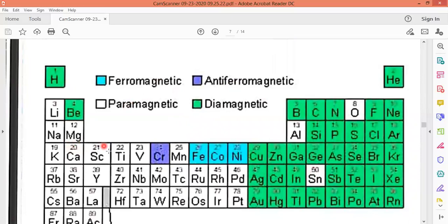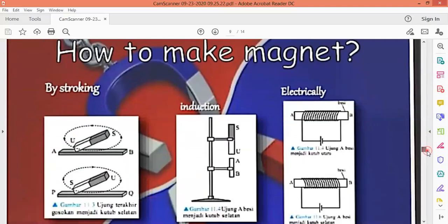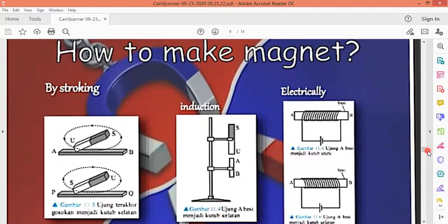The white ones are the paramagnetic materials, those materials which possess the property of paramagnetism. This is the whole periodic table. How to make a magnet? This is just a revision part. We can make magnets by stroking two magnets while stroking. Here we have taken this example. I have attached the figure here. And the second part is by induction.